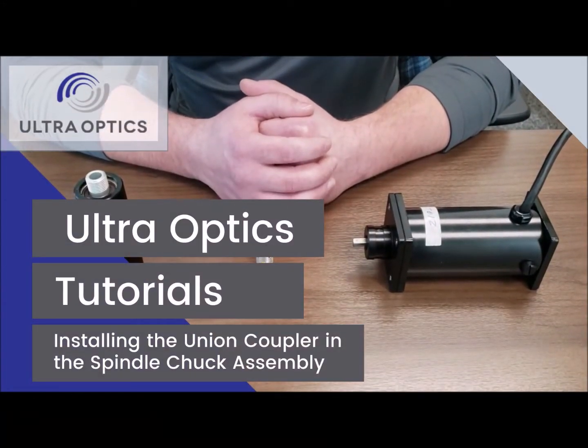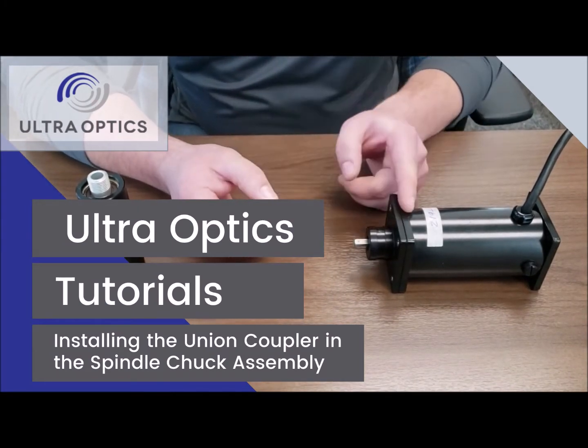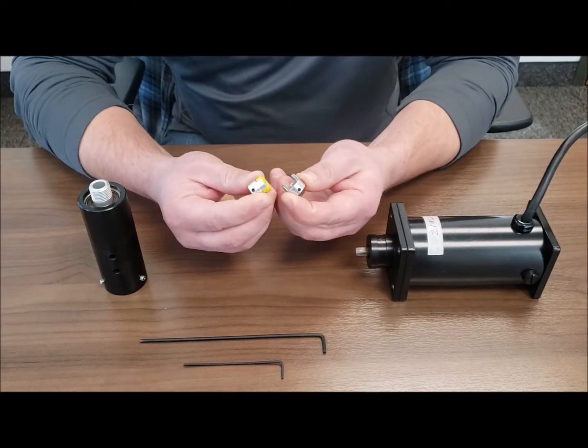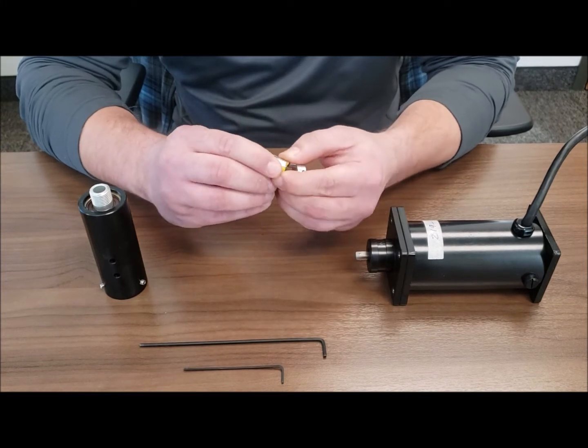This video demonstrates the proper installation of the coupler between the spindle motor and vacuum chuck assembly. The coupler comes apart in three parts: the two mounting parts and the bushing.